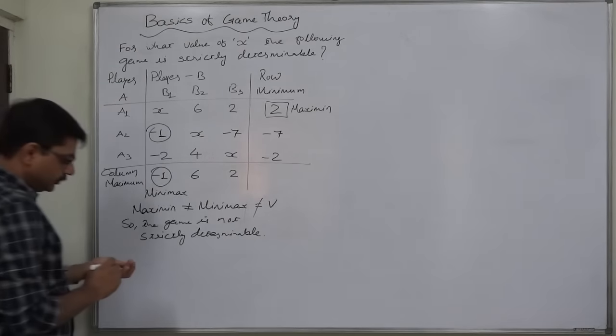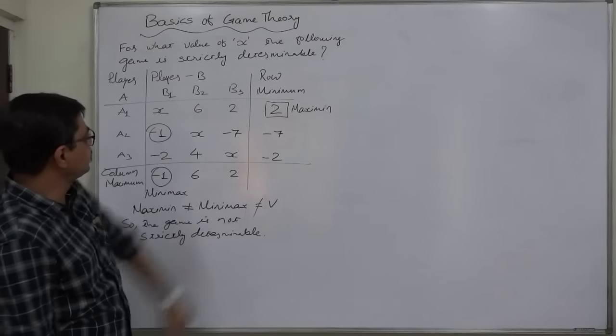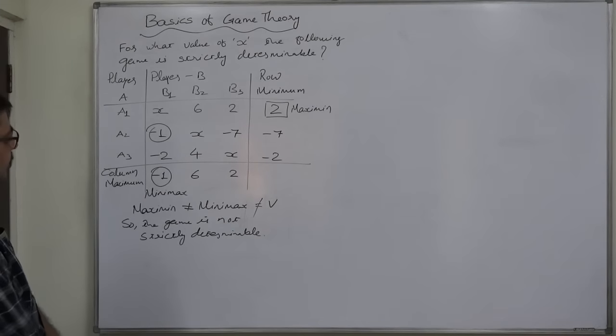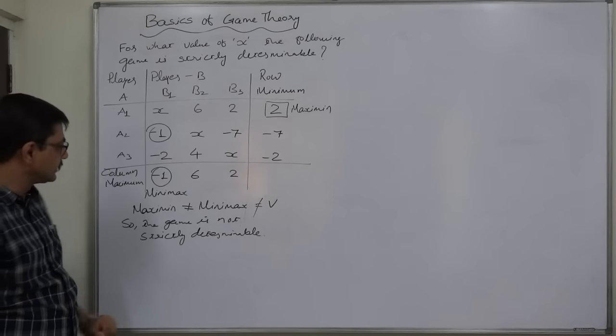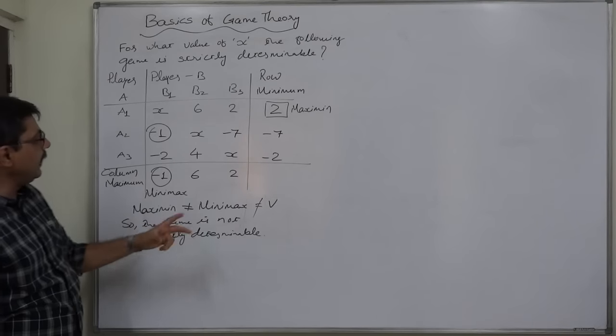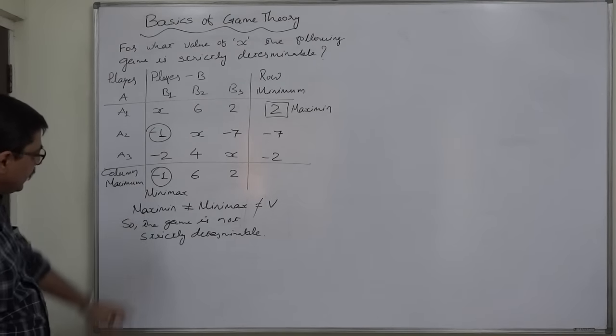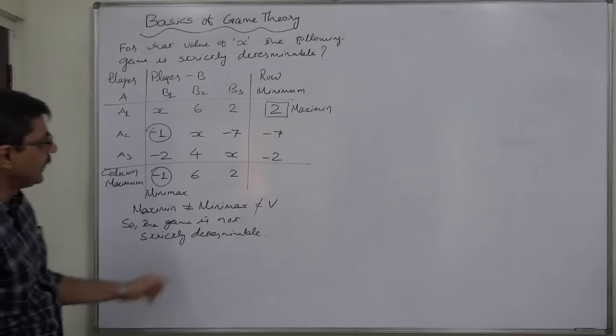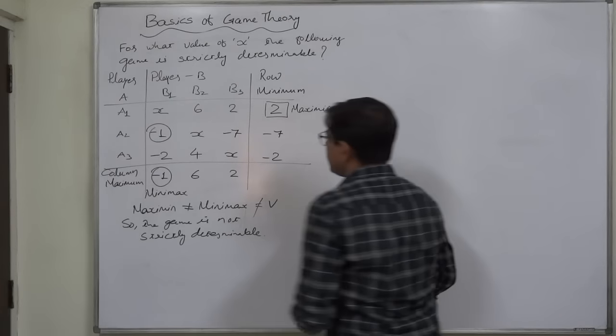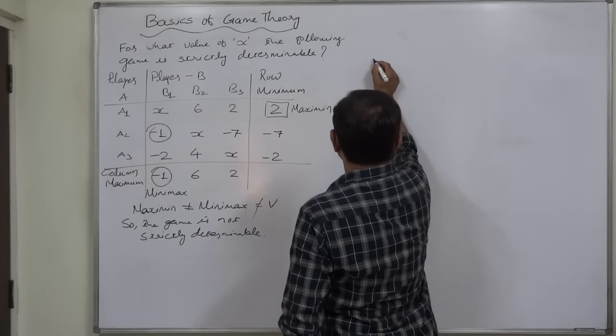Now the question is, for what value of X the game can be strictly determinable? The answer is now with us. Minimax, to have this game strictly determinable, minimax should not be less than minus 1 and maximin should not be greater than 2, the present values.